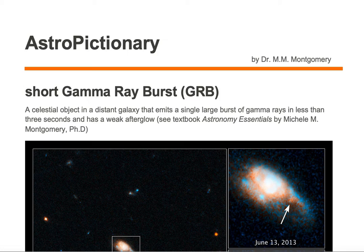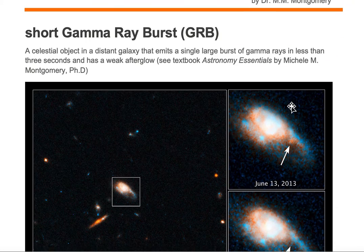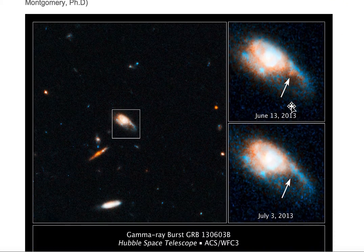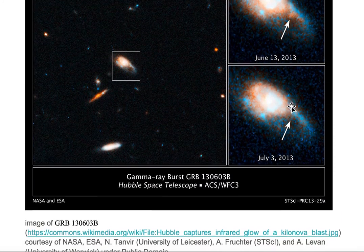A short gamma-ray burst is a celestial object in a distant galaxy that emits a single large burst of gamma rays in less than three seconds and has a weak afterglow. Let's take a look at an example of a short gamma-ray burst.